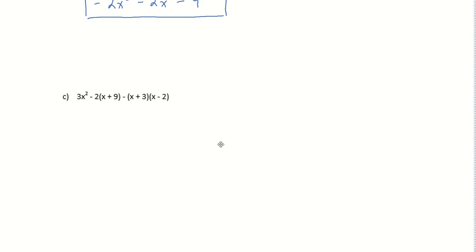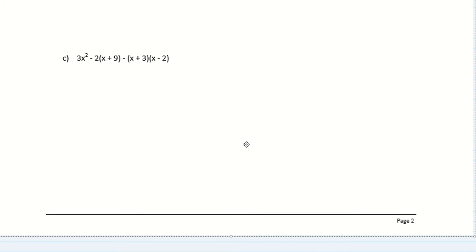All right, and the last one, the last example we'll do here is just more of the same. We've got a distributing, or sorry, a foiling situation, and a distributing situation there. I'm just going to go ahead and go for it here. So I'm going to distribute, and then we're going to foil this out. So that's 3x squared minus 2x minus 18.